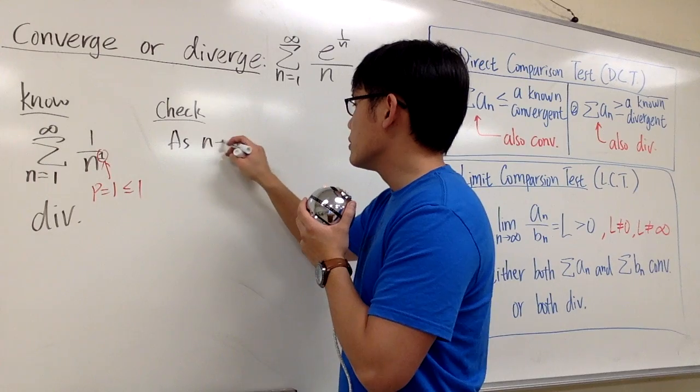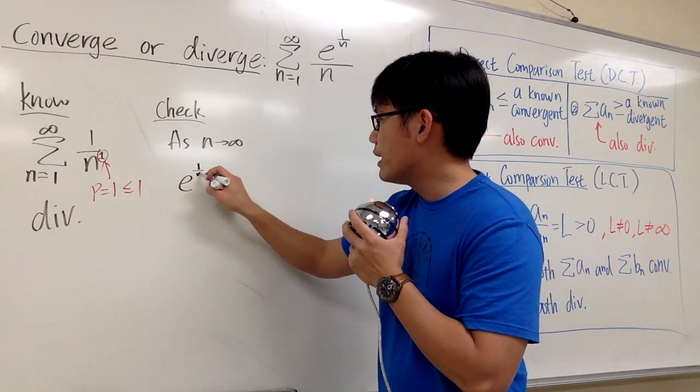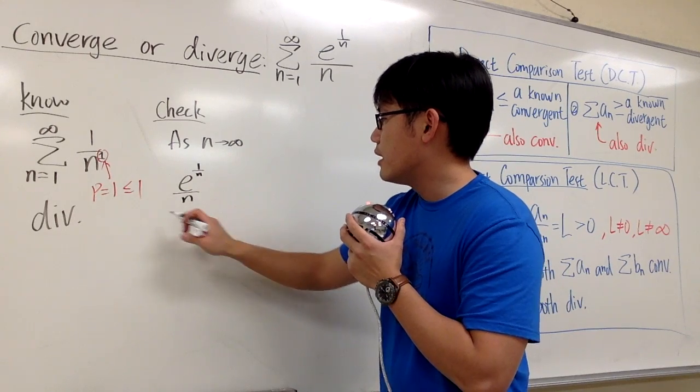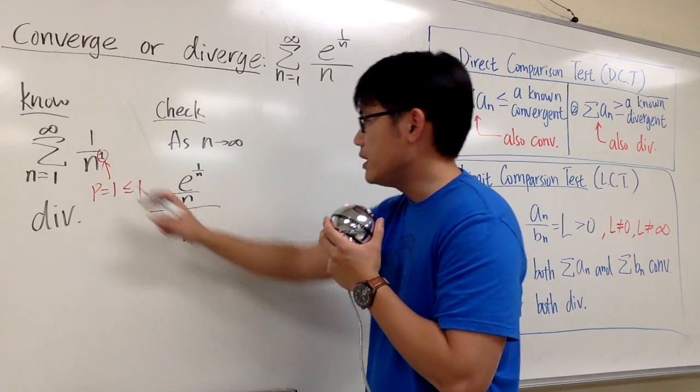Let's check: as n goes to infinity, we have a_n, which is e to the 1 over n over n, divided by something we know better, which is 1 over n. That's the b_n part.